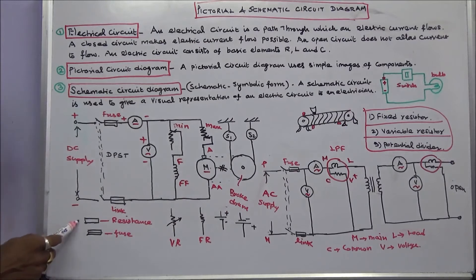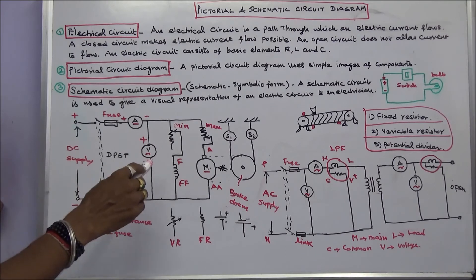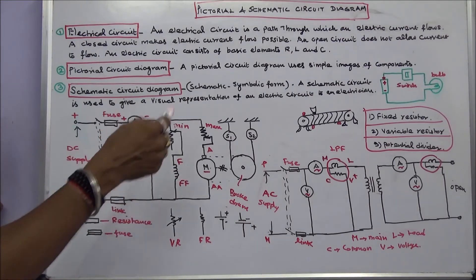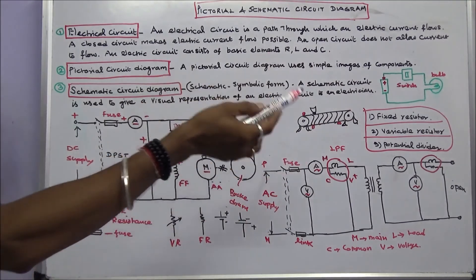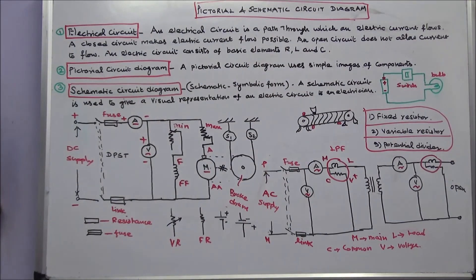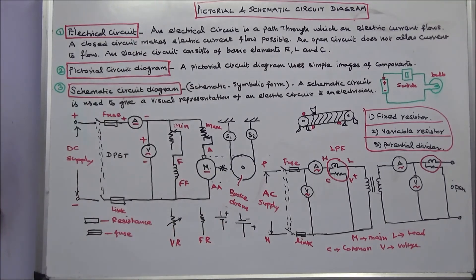This is a symbol of resistor. This is symbol of fuse. This symbol is variable resistor. This symbol is fixed resistor. The schematic circuit diagram consists of symbols. Using symbols, we draw a circuit diagram. This circuit diagram can easily be understood by the electrician. This circuit diagram, pictorial circuit diagram, anybody can understand the pictorial circuit diagram. This is the basic difference between pictorial circuit diagram and schematic circuit diagram. Thanks for listening.